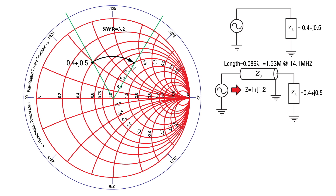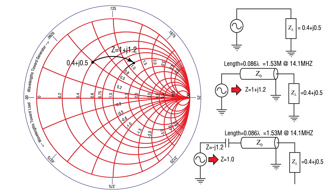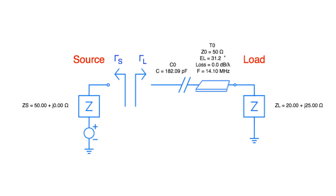This takes us to a point on the Smith chart with a normalized impedance of 1 plus J 1.2. Now to get to the center of the Smith chart, we want to slide around the R equals 1 circle by adding a reactance of minus J 1.2 — a capacitive reactance in series with a magnitude of 1.2. So by adding 1.53 meters of RG8 transmission line and a capacitor of 182 picofarads in series to the load impedance at 14.1 MHz, we have converted a standing wave ratio of 3.21 to a standing wave ratio of 1.0.